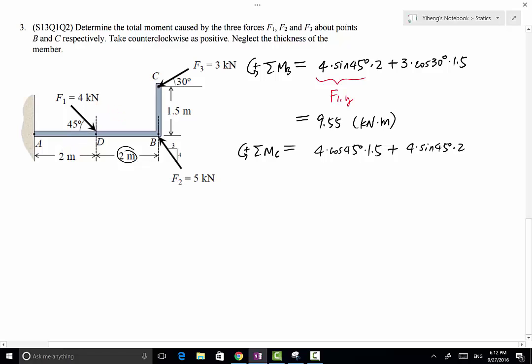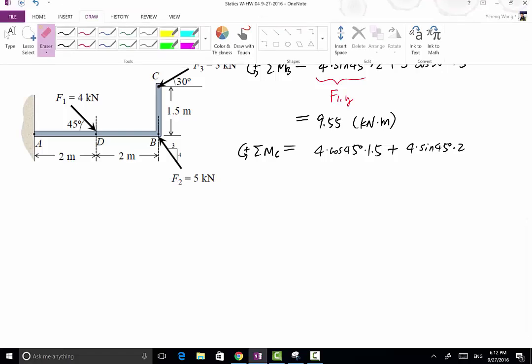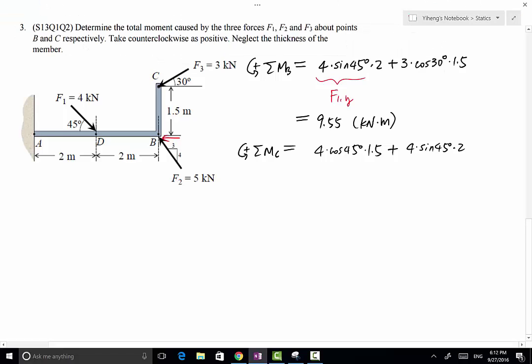Moving on to F2. F2 has two components, F2X and F2Y. As you can see, the component F2Y, its line of action passes through point C. It does not have any moment about point C. Then moving on to F2X.